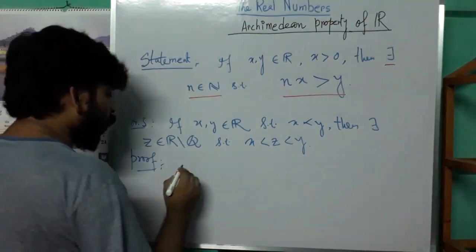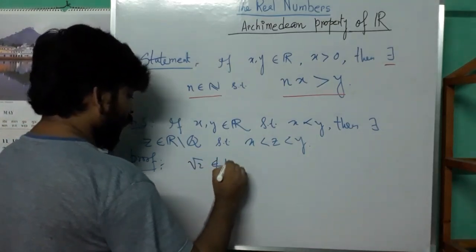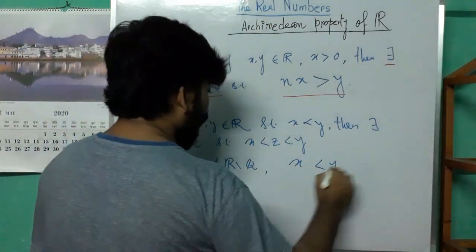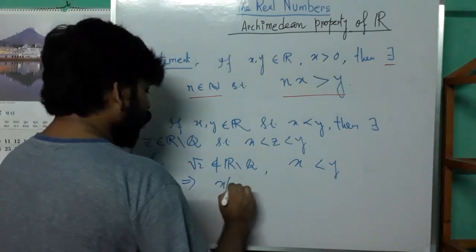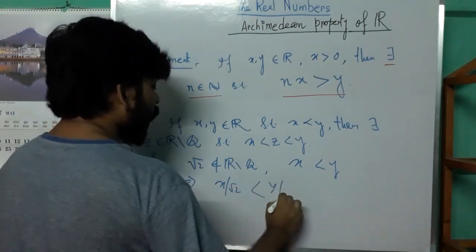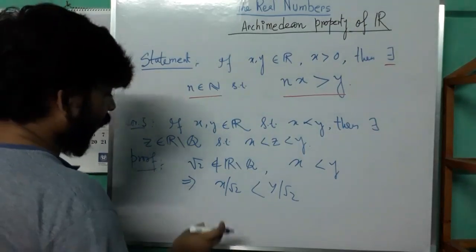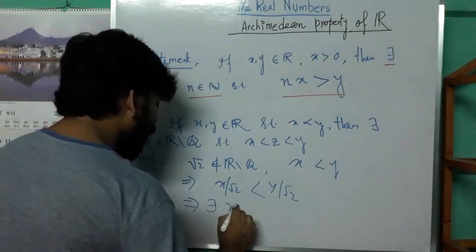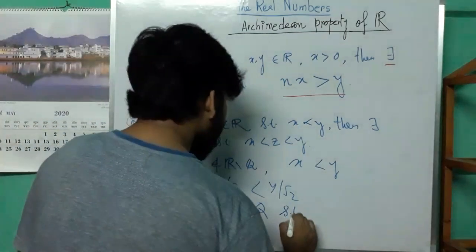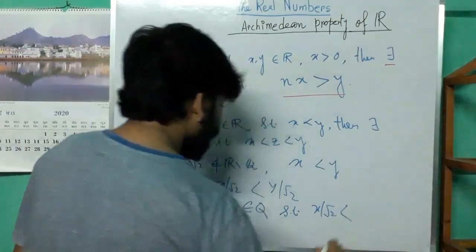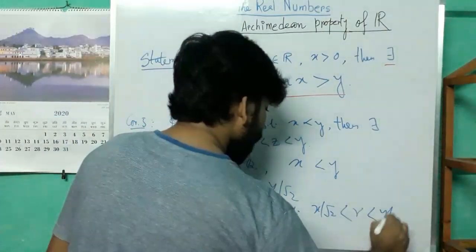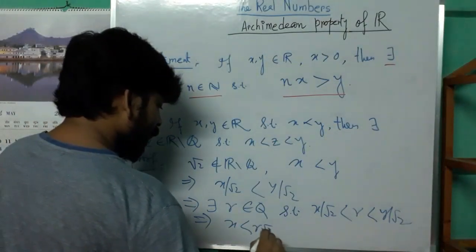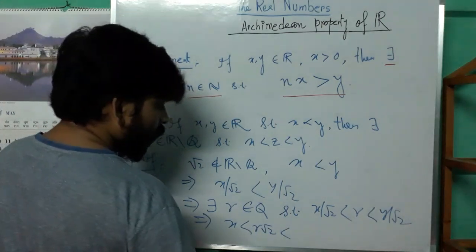Proof: we know that √2 is irrational. Given x < y, this implies x/√2 < y/√2. Since x/√2 and y/√2 are two real numbers, by the density property there exists a rational number r between them, so x/√2 < r < y/√2, which gives x < r√2 < y.